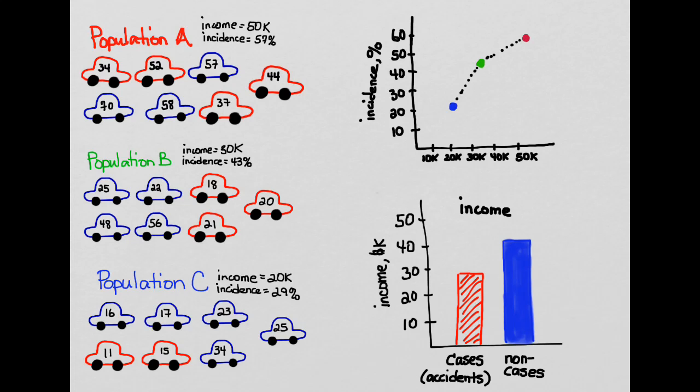Take a minute to look at this, you can actually do the calculations yourself if you like. But it's a very important example to just show you how group level data can mask relationships that are occurring at the individual level.